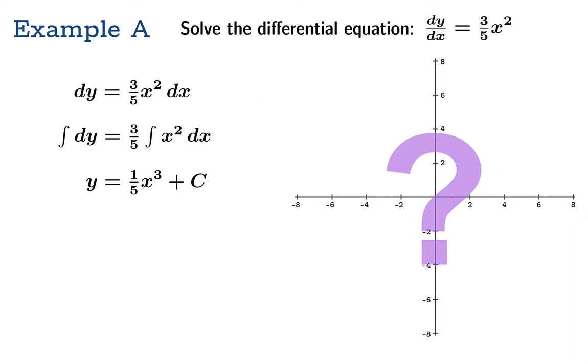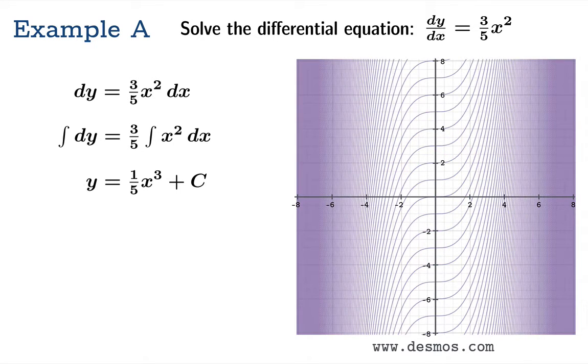We've seen this picture before because the original differential equation is asking what functions have derivative equal to 3/5 x squared - we're really asking an antiderivative question. Our family of antiderivatives is obtained by moving one antiderivative up and down vertically, which is what you get by plugging in different values of c.